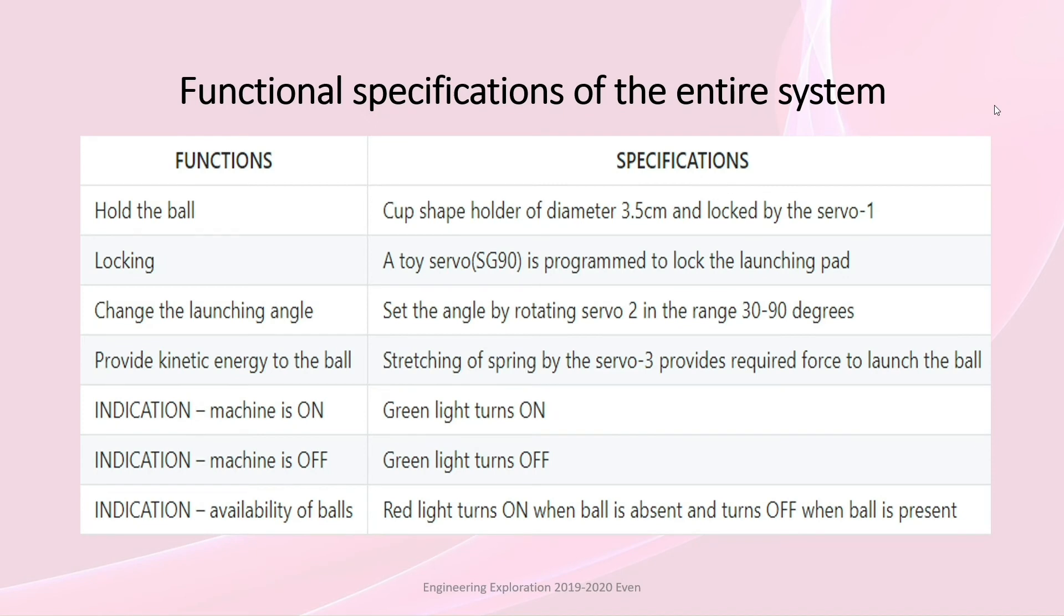Function specification of entire system. Hold the ball: Cup shape holder of diameter 3.5cm and locked by servo 1. Locking: A toy servo SG90 is programmed to lock the launching pad. Change the launching angle: Set the angle by rotating servo 2 in range 30 to 90 degrees. Provide kinetic energy to the ball: Stretching of spring by servo 3 provides required force to launch the ball.